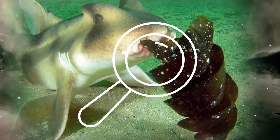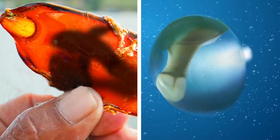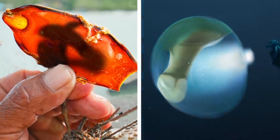From corkscrew-shaped casings to doting fathers who incubate hundreds of eggs in their mouth, here are 13 of the weirdest animal eggs!